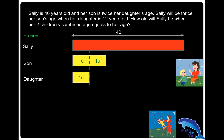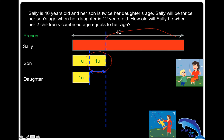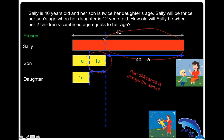The age difference between the daughter and the son is always one unit — that portion there. Likewise, the age difference between Sally and her son is always this portion, which we can call 40 minus two yellow blocks in model form. Bear in mind this concept: the age difference is always the same, because I'm going to make use of this important concept going forward.